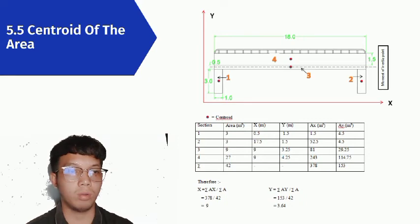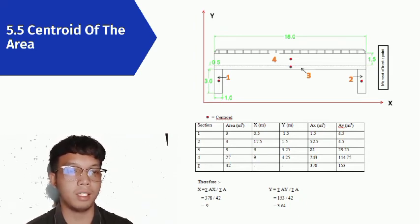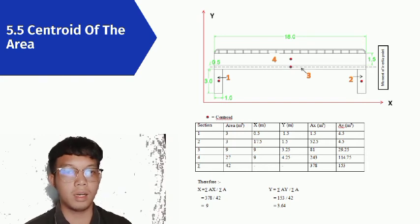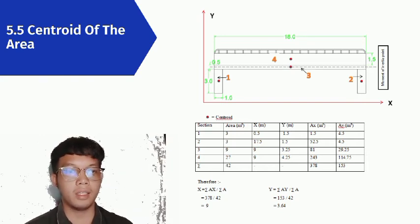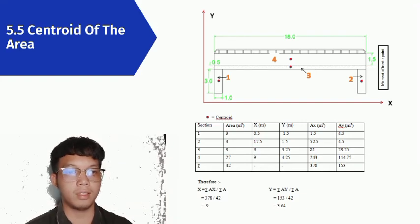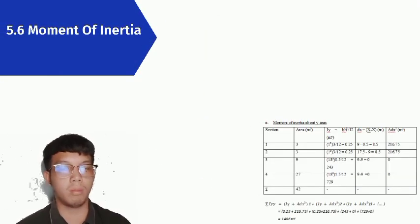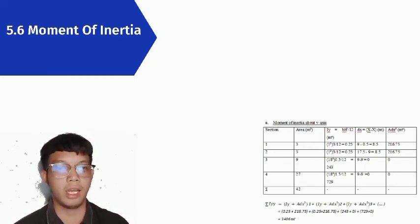The four parts are: pier at point A, pier at point B, the beam slab itself, and the guard rail. After calculating the centroid of each area and summarizing into x and y axes, the centroid for the x-axis is located at 9 meters and the centroid for the y-axis is at 3.64 meters.